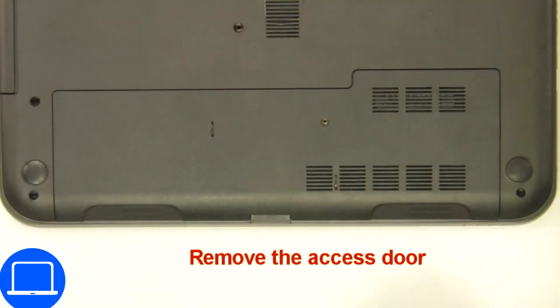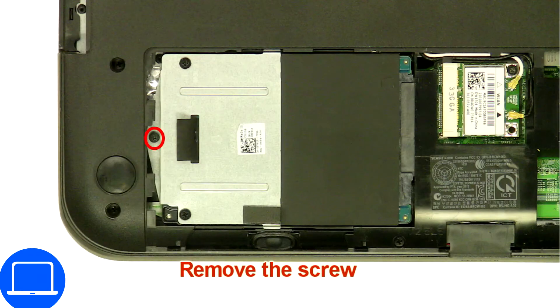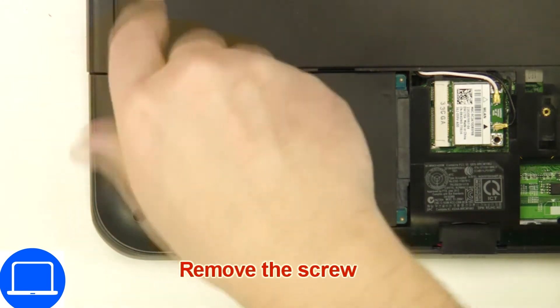Unscrew then remove access door. Now unscrew and remove caddy.